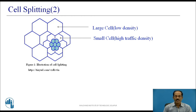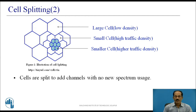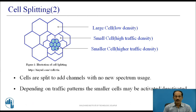Certain cells are split into two or three cells, but these cells can only handle high density. In the event that more users must be supported per cell, perhaps in the central cell, we try to subdivide further by putting smaller and smaller base stations; therefore, these smaller cells imply greater capacity. Cells are split to add channels with no new spectrum usage. Depending on the traffic pattern, smaller cells may be activated or deactivated to efficiently use cell resources.